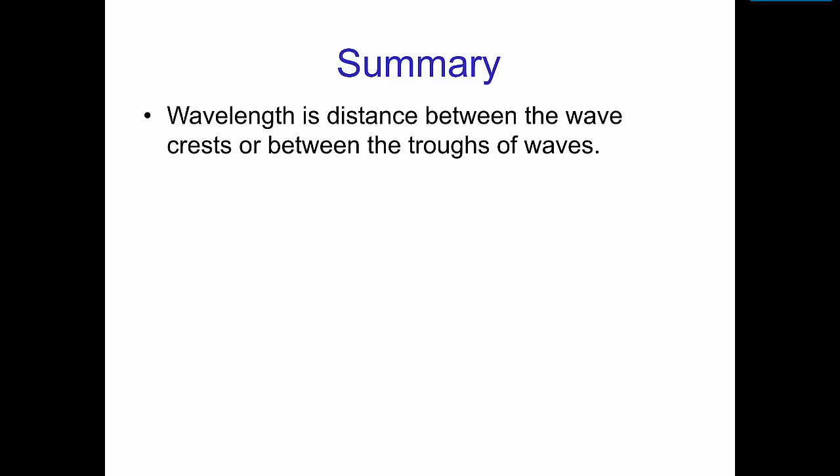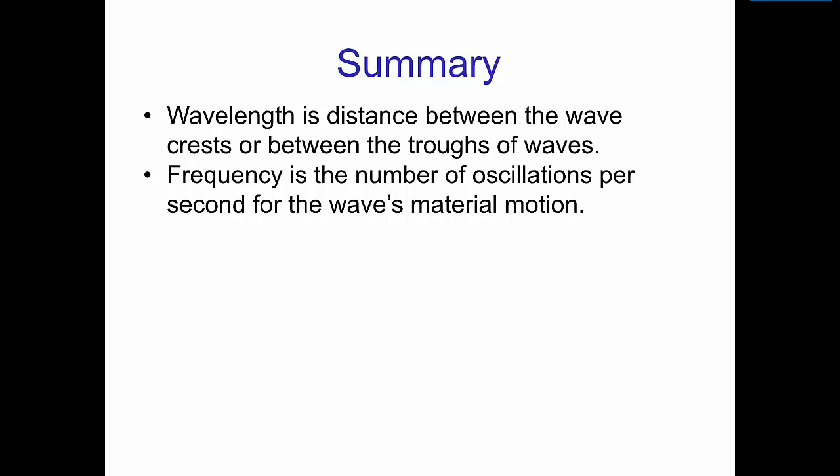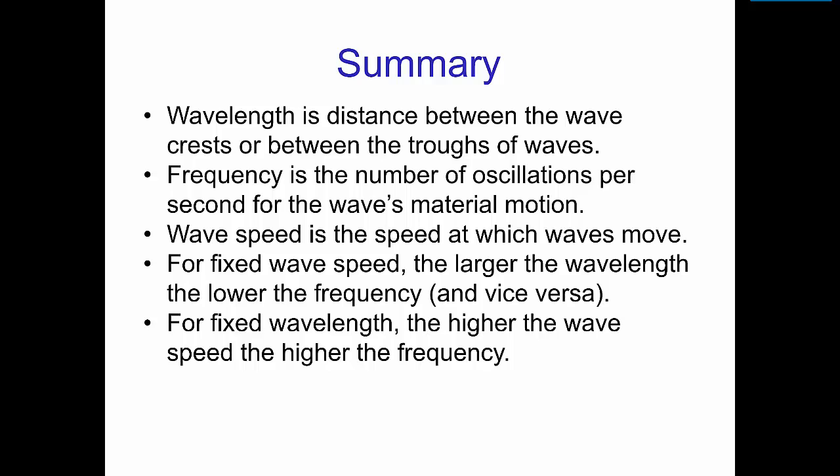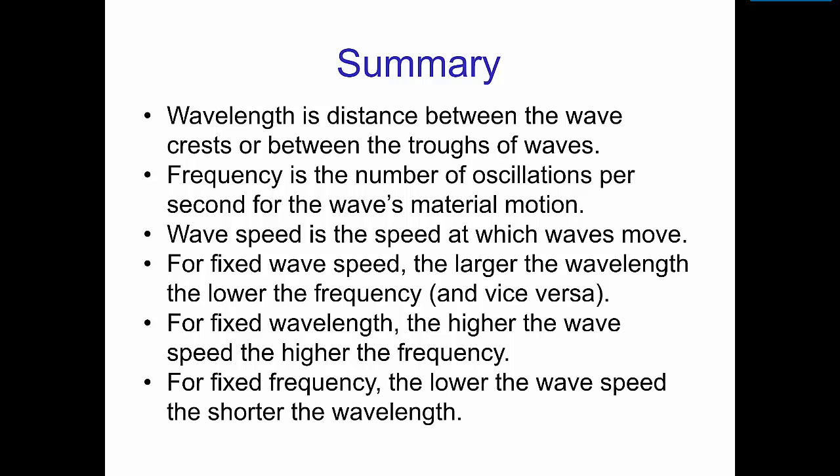So, in summary, the wavelength is the distance between the wave crests or between the wave troughs of waves. The frequency is the number of oscillations per second for the wave's material motion. The wave speed is the speed at which the waves move. For fixed wave speed, the larger the wavelength, the lower the frequency, and vice versa. For fixed wavelength, the higher the wave speed, the higher the frequency. And for fixed frequency, the lower the wave speed, the shorter the wavelength.